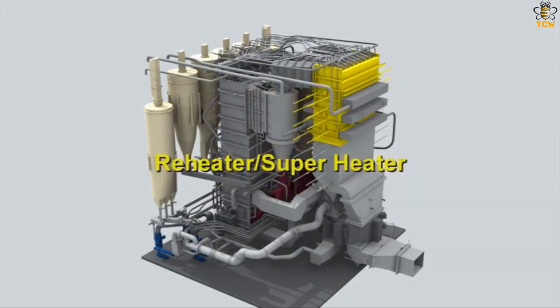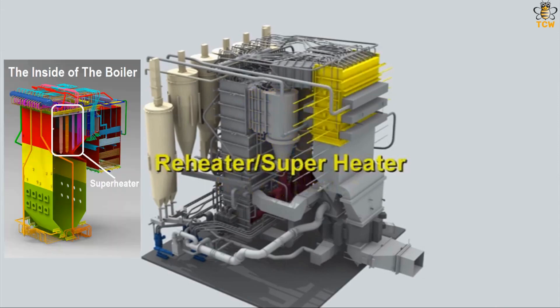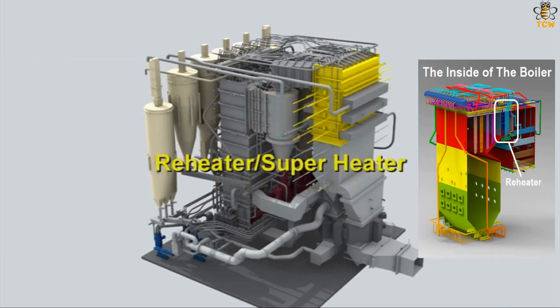The next components are the superheater and reheater. The superheater is an arrangement of pipes in the boiler used to convert saturated steam or wet steam into superheated steam or dry steam by absorbing heat from hot coal combustion gases at very high temperatures. The reheater is an arrangement of pipes used to raise again the temperature of steam coming out of the turbine, since the hot gas passing through the superheater is still quite high in temperature. This steam is then flowed into a low-pressure turbine.